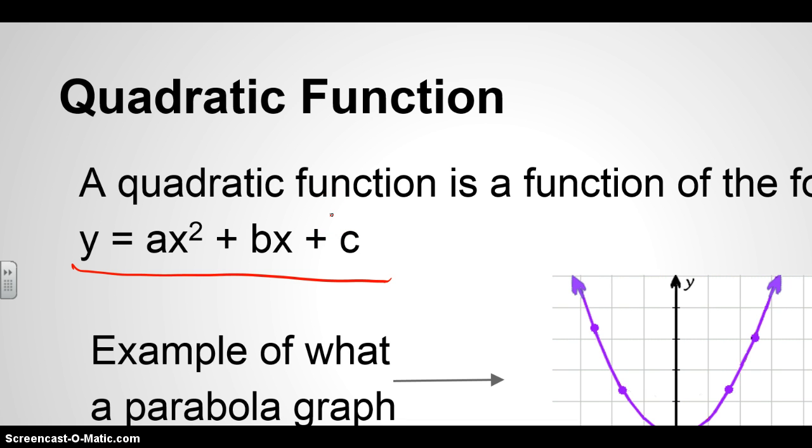And parabolas always have a vertex. And right here, the vertex is at 0, 0. And in this situation, this parabola is going up. And today, in today's lesson, we're going to explain how the parabolas are graphed based on your quadratic function.